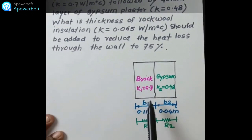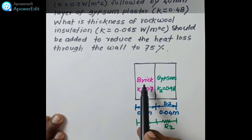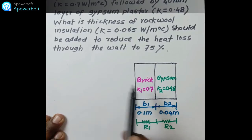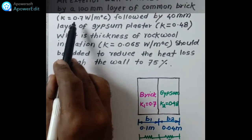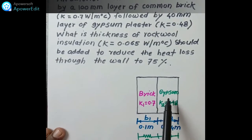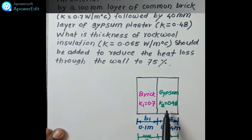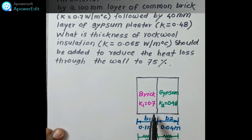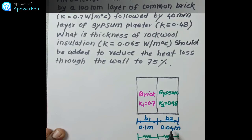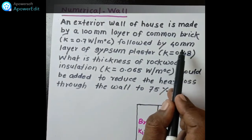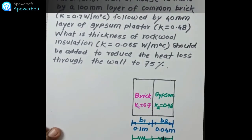In this diagram you can see the first layer of material is brick, with thermal conductivity 0.7, and the second layer is gypsum with thermal conductivity 0.48. The dimensions are: thickness B1 for the first layer is 100 mm, which is 0.1 meter, and the second layer B2 is 40 mm, which is 0.04 meter.